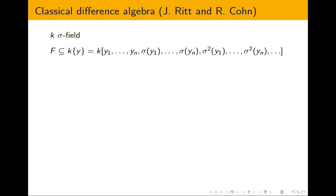To put things into context, I'll recall what classical difference algebra has to say. Everything I'll say is in Cohn's book, but most of it was already known to Ritt. We fix a difference field — a difference ring is simply a commutative ring with an endomorphism called sigma; a difference field is a field together with an endomorphism. We also call it a sigma-ring.